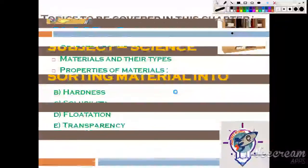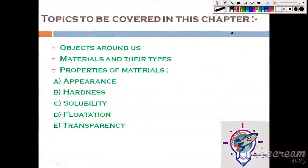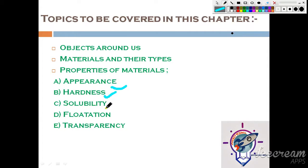Let's start the chapter. The topics to be covered in this chapter are listed below. The first topic is objects around us. The second topic is materials and their types. The third topic is properties of materials — what are the properties? Appearance, hardness, solubility, flotation, and the last topic is transparency.